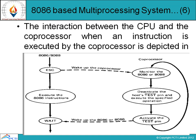The interaction between the CPU and the coprocessor when an instruction is executed by the coprocessor is depicted here. We have the 8086 or 8088 microprocessor — the host processor — which wakes up the coprocessor. It executes the 8086 instruction and then waits. The coprocessor monitors the 8086 or 8088, deactivates the host test pin, executes the specified operation, and then activates the test pin.